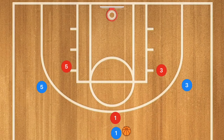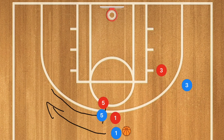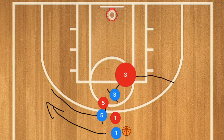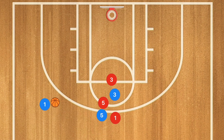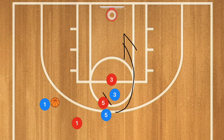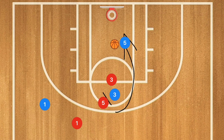The first thing that happens in a Spain screen is when you've got Player 5 setting a screen for Player 1. Player 1 will use that screen, and at the same time Player 3 is going to be setting a screen on Player 5. So once Player 1 gets past Player 5 — Player 1 could take that shot — we're going to have Player 5 cut to the basket after using Player 3 as a screen. From there, what we're really looking for is a pass to Player 5, whether it be a chest pass, a bounce pass, an alley-oop — whatever it could be. That is the main idea behind this.